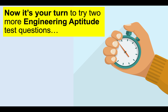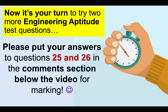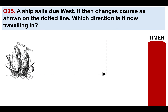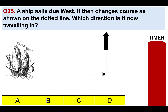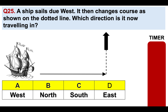Now it's your turn to try two more engineering aptitude test questions. Please put your answers to questions 25 and 26 in the comments section below the video. Question 25: a ship sails due west — you can see the arrow going due west. It then changes course as shown on the dotted line. Which direction is it now traveling? A: west, B: north, C: south, or D: east?